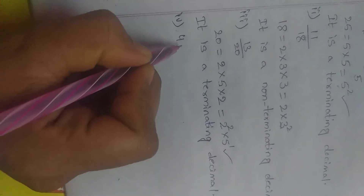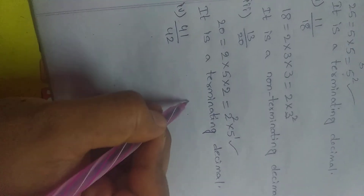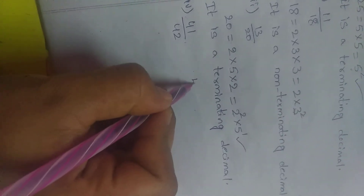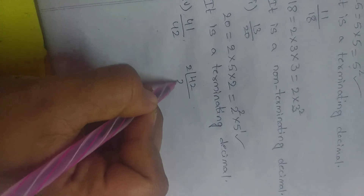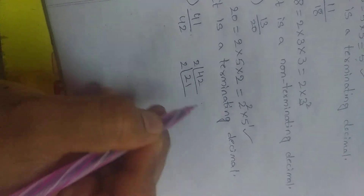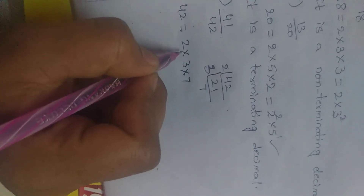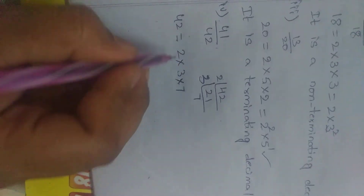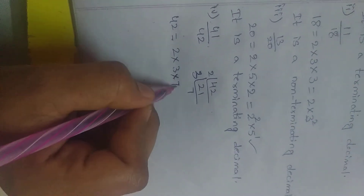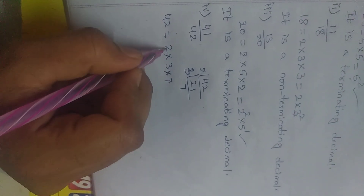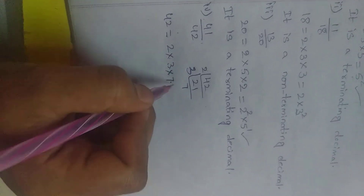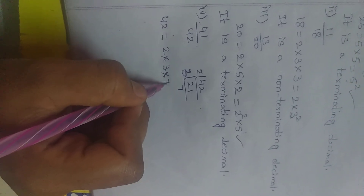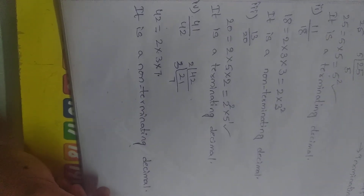Fourth problem: 41 by 42. The denominator is 42. Now 42 equals 2 times 21, and 21 equals 3 times 7. So the denominator contains prime factors 3 and 7 in addition to 2, therefore it is a non-terminating decimal.